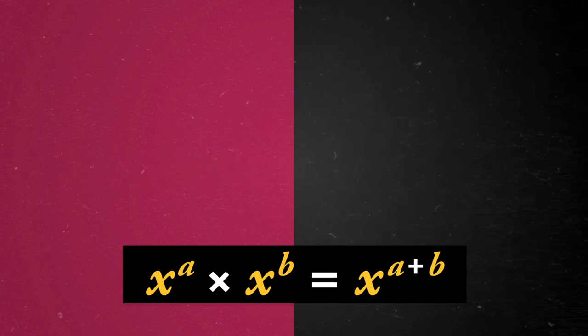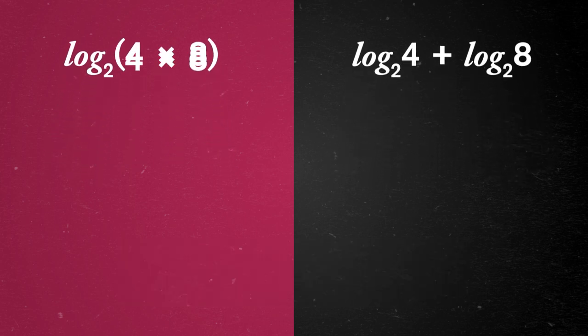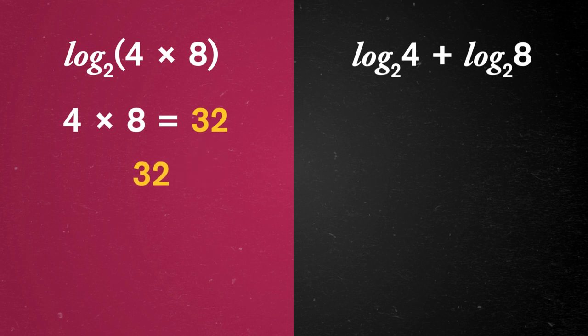And we can do an example just to be sure. Our rule says that log base 2 of 4 times 8 equals log base 2 of 4 plus log base 2 of 8. On one side, we have 4 times 8 is 32. So log base 2 of 32 is asking, what power of 2 equals 32?